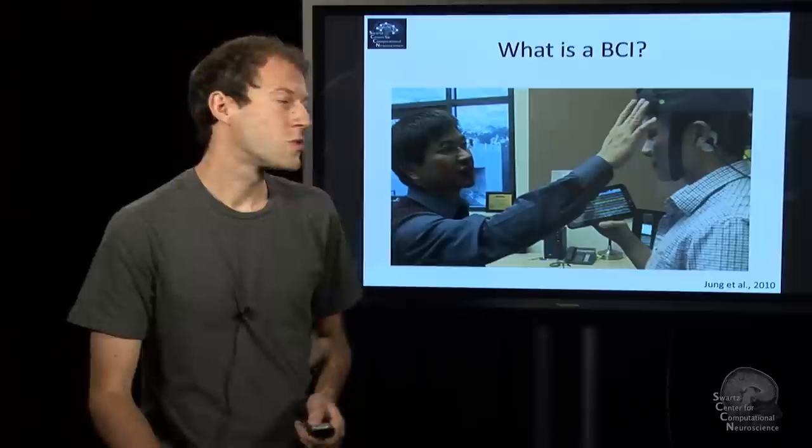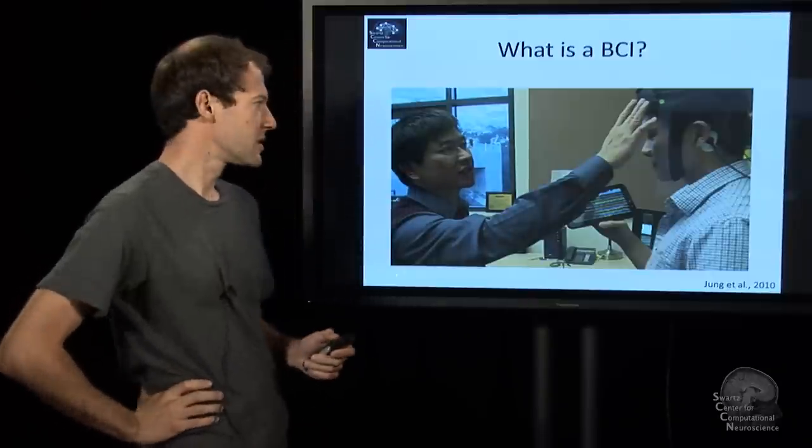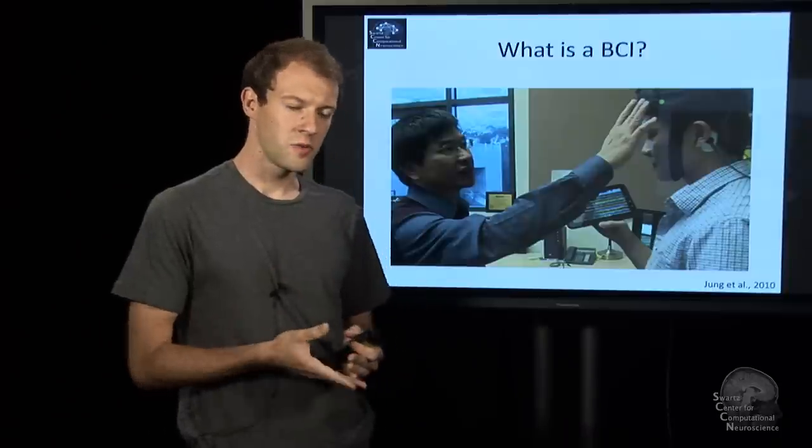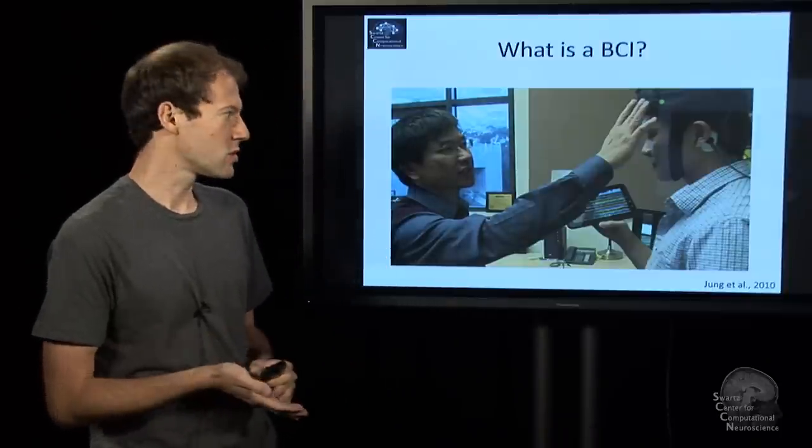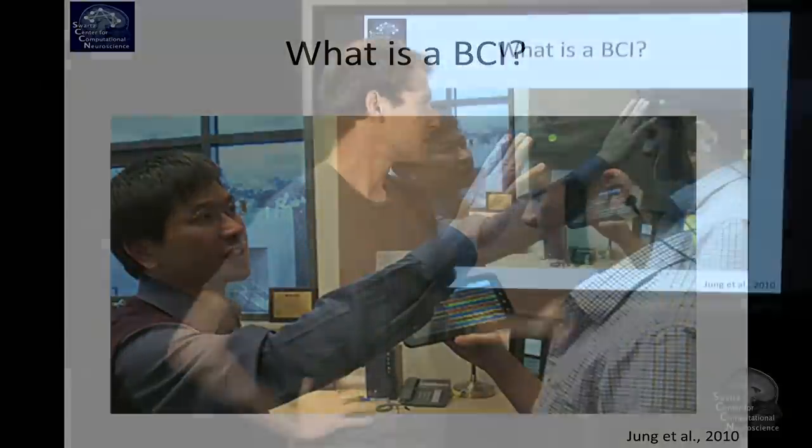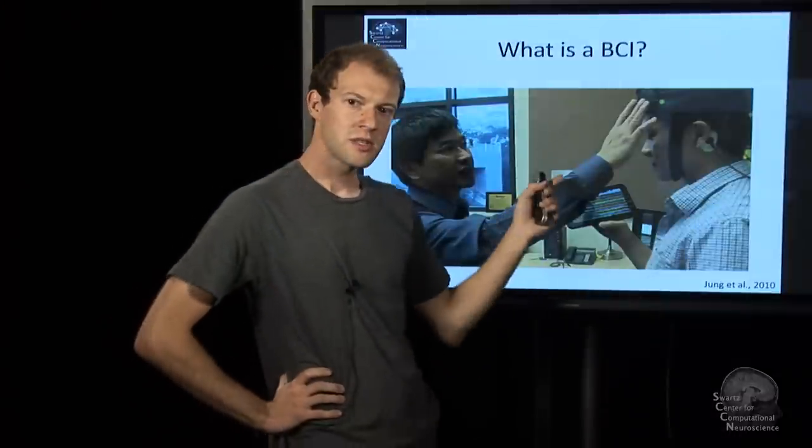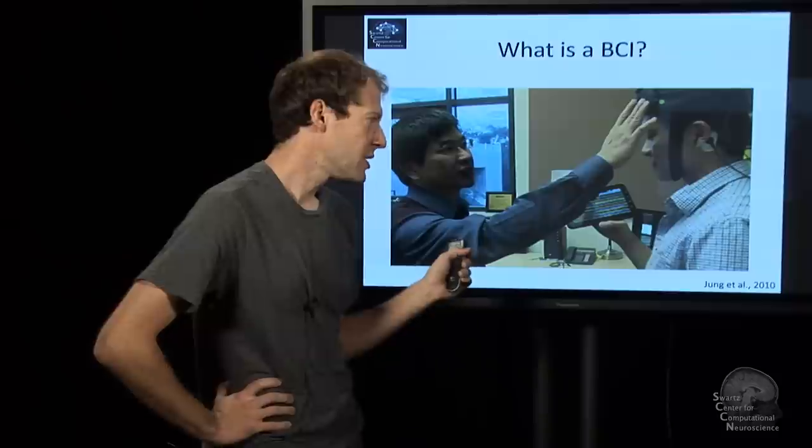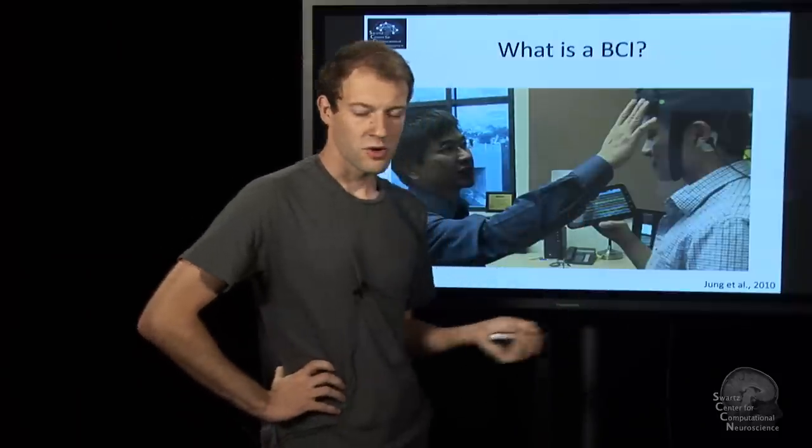And the first question is, what is a brain-computer interface? You can think of it as a direct link between the brain of a person and a computer. More precisely, it's a system which measures nervous system activity or brain activity and then processes this activity and converts it into an output that can be used by a computer.